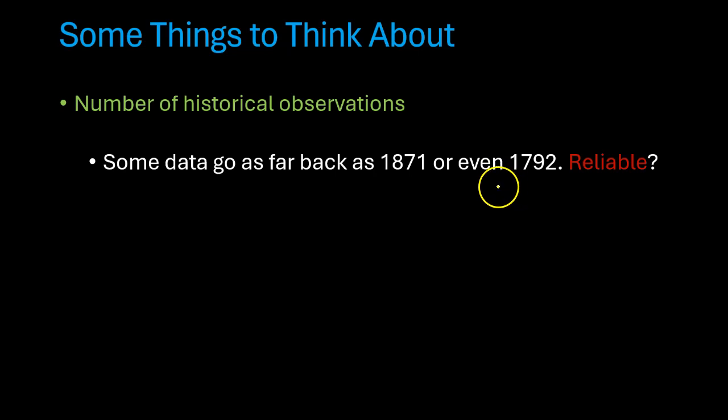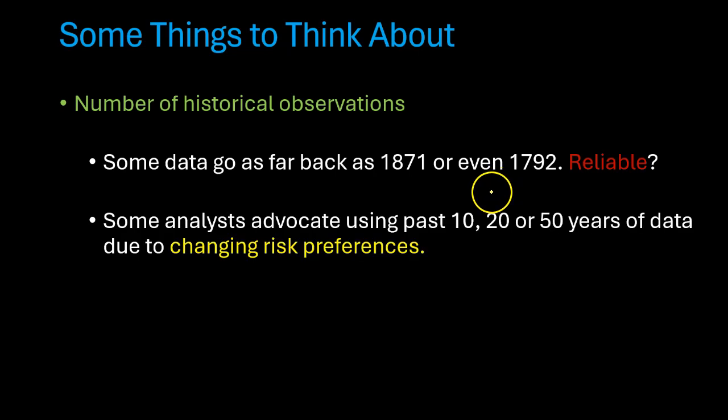In fact, other people argue that the way the stock markets and the capital markets behaved in the 1800s is very different from how they behave in the 1900s or the 2000s. More specifically, people's attitudes towards risk and therefore the degree of risk aversion may have changed over the years. And so for that reason, some analysts actually advocate using past 10, 20 or 50 years of data. In general, it is considered a good idea to use a large number of observations because we want the standard error of our estimate to be as low as possible. However, be mindful that some people can make a case for using more recent data, while others can make a case for using older data as well.